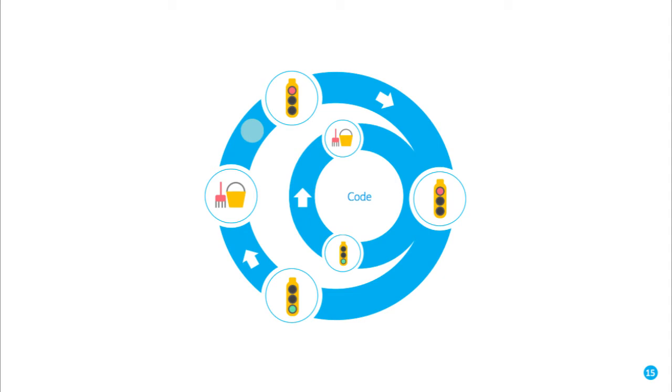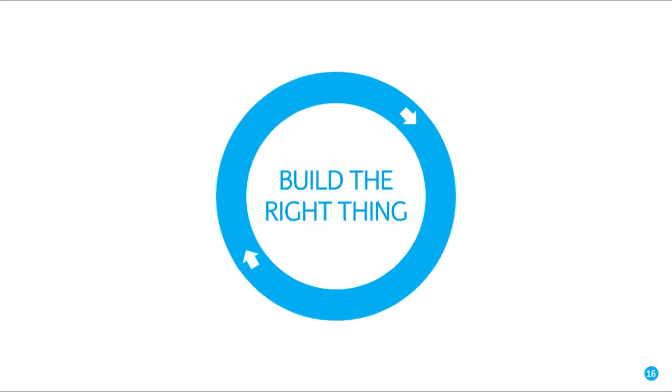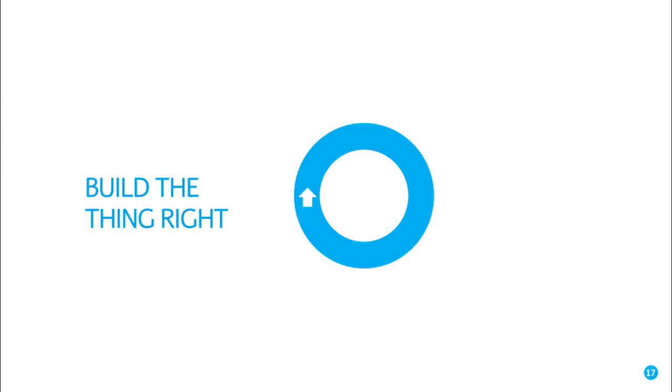You'll hear people talking about inner circles, maybe outer circles of testing. So you code, you create failing test, you code to make it pass, and then you clean it up and refactor. So you're building the right thing, that's your outer circle to make sure you build the right thing. And your inner circle is build the thing right, i.e., your engineering practices.